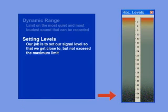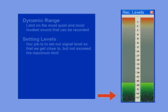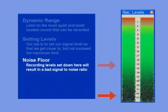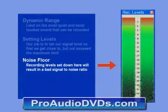Both of these extremes — down here and up here — have dangers of their own. Down here is the inherent noise of any signal path, the low-level hiss and hum of, say, your mic cable. I wouldn't set my level way down here because it is down in what we call the noise floor. If you later wanted to amplify this recorded audio, you would bring up the noise floor too, giving you a horrible signal-to-noise ratio.